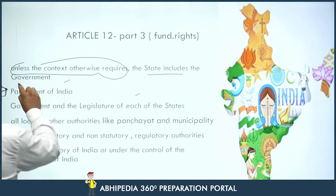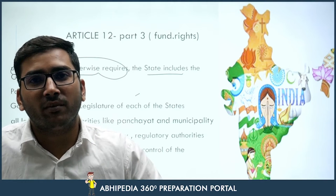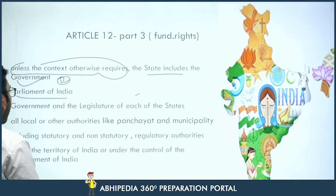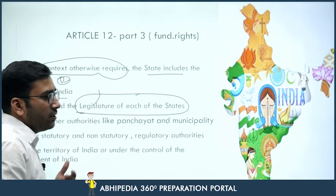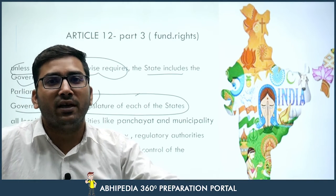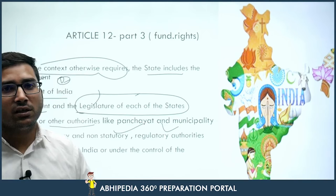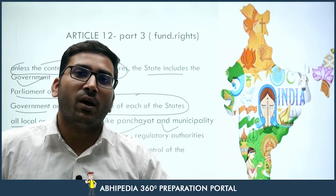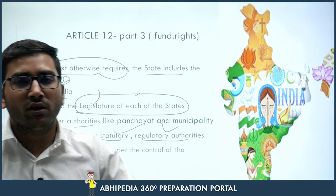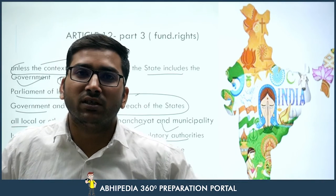For the meantime, 'state' includes: first, the Government — cabinet ministers, council of ministers, the executive government; second, the Parliament of India; third, the government and legislature of each state, where MLAs and MLCs sit; and fourth, all local and other authorities like panchayats and municipalities — these grassroot authorities are also an integral part of the state definition. Additionally, statutory, non-statutory, and regulatory authorities are included. Statutory authorities are created by Parliament's law; non-statutory arise from executive actions; regulatory authorities like the RBI have special regulatory and quasi-judicial provisions.